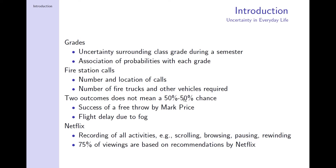Think about two outcomes: having two outcomes does not mean there is a 50-50 chance that either happens. The easiest example is making a free throw in basketball. Mark Price holds the record for scoring free throws. The ball can either go into the basket or it cannot, but just because there are two outcomes doesn't mean there's a 50-50 chance.